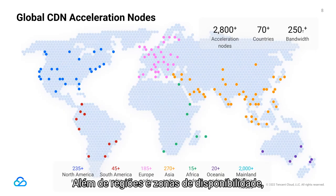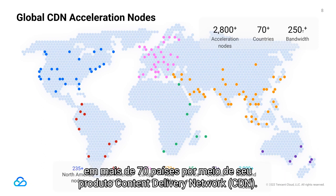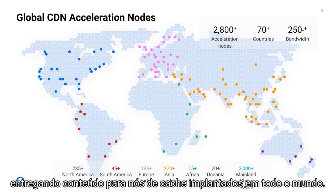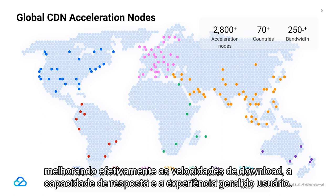In addition to regions and availability zones, Tencent Cloud also offers over 2,800 acceleration nodes and 250 terabits per second of bandwidth across over 70 countries through its Content Delivery Network (CDN) product. CDN is a delivery acceleration service that enables nearby access for end users by delivering content to cache nodes deployed worldwide. The globally distributed network reduces network jitter and latency, effectively improving download speeds, responsiveness, and the overall user experience.